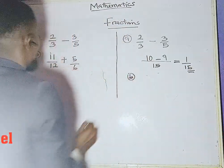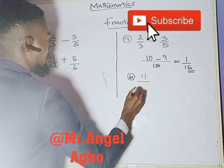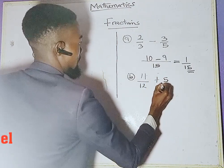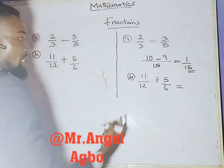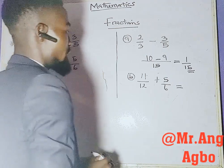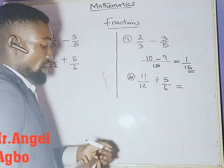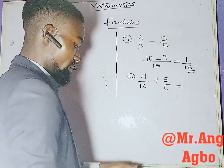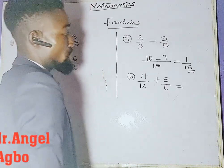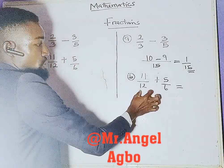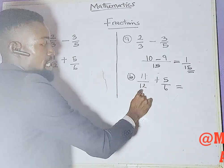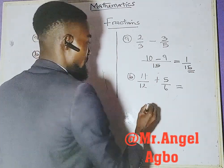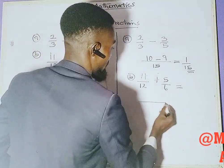Part B says 11 divided by 12 plus 5 divided by 6. We're going to do the same thing. The LCM should be 12, because 12 can divide 6 without remainder. So we're not going to multiply 12 times 6 to find our LCM — 12 itself can divide 6 without remainder. We draw a line as usual and write our 12.